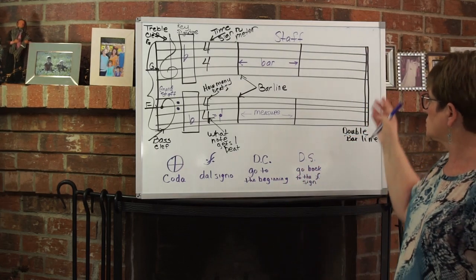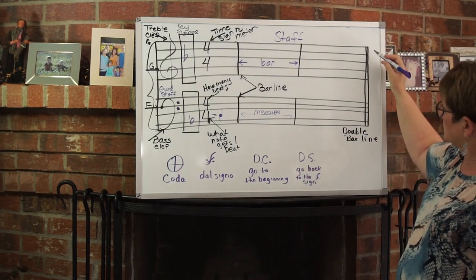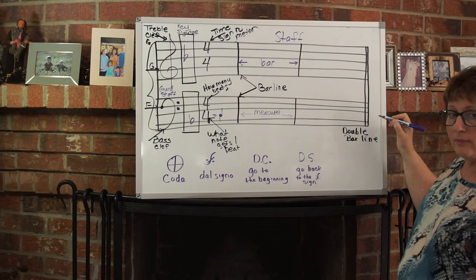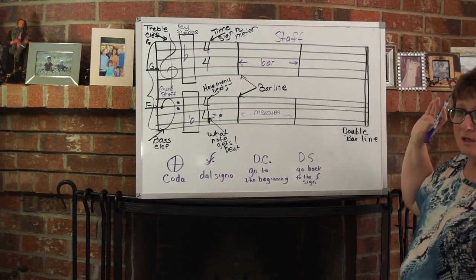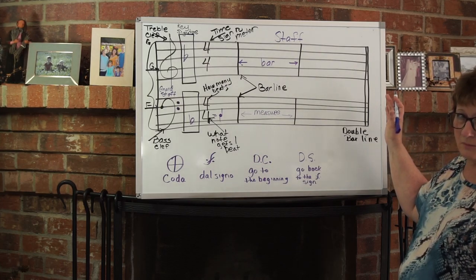And if you'll recall, those two lines are called, might look a little wonky, but that's okay. They're called double bar lines. And that means the end, finished, done, or something's fixing to change in the music.